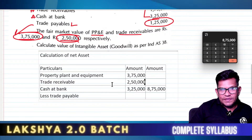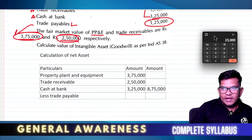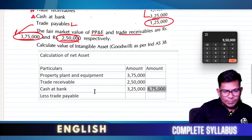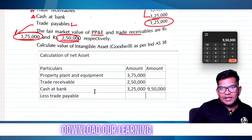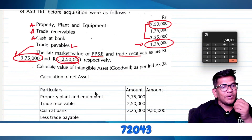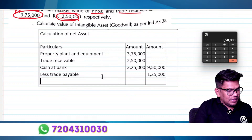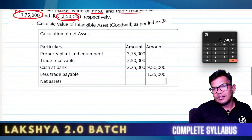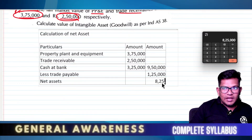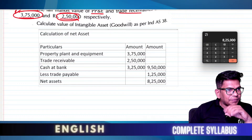Correction: the values are 3 lakh 75 thousand, 2 lakh 50 thousand, and 3 lakh 25 thousand — total assets are 9 lakh 50 thousand. Less trade receivables and trade payable of 1 lakh 25 thousand. So net assets come to 8 lakh 25 thousand.